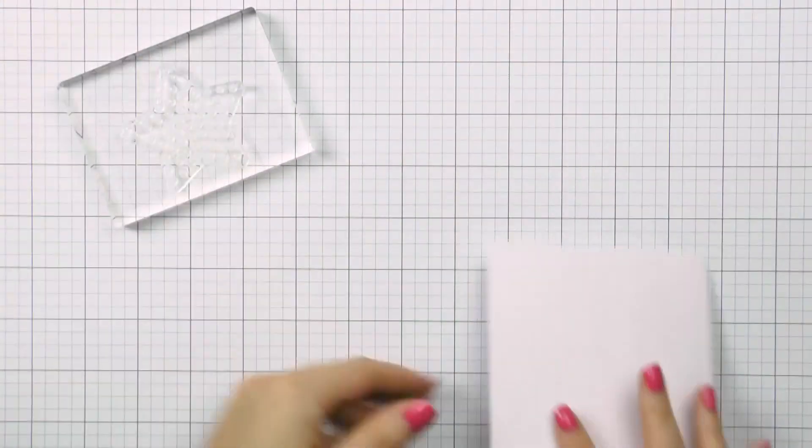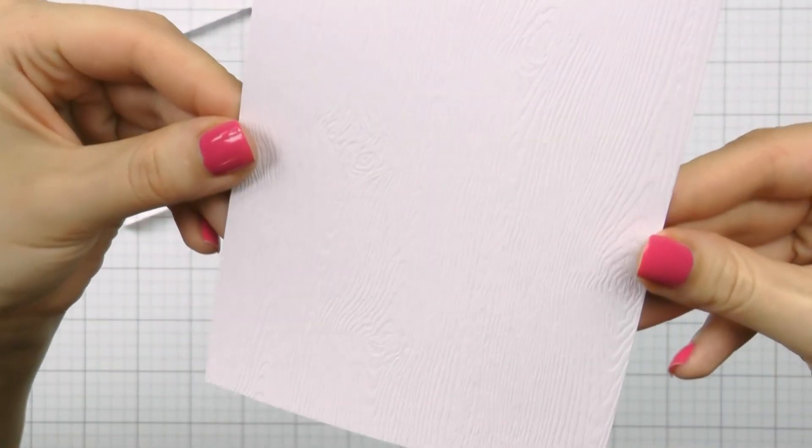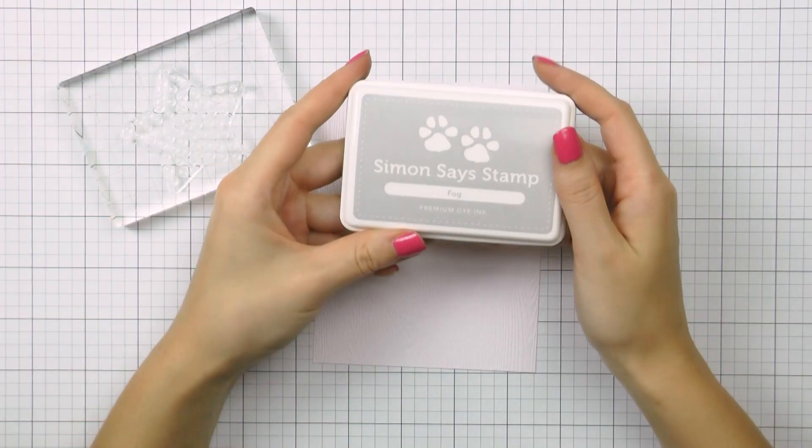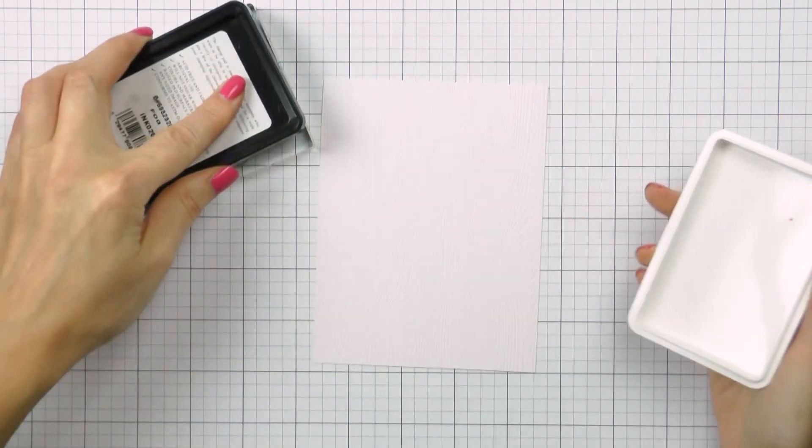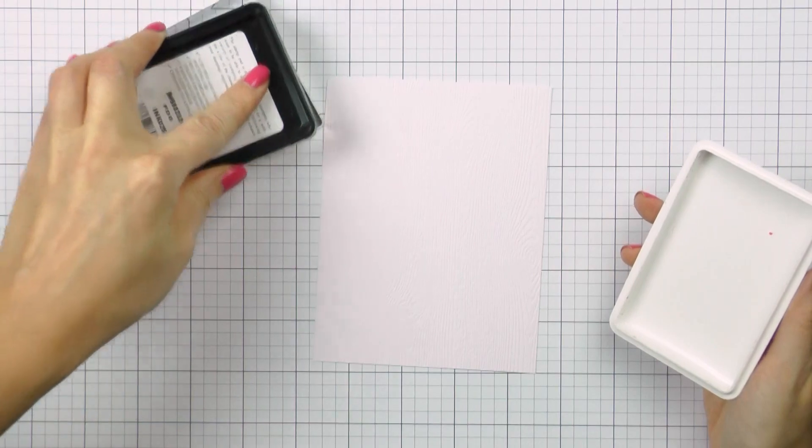So you are probably wondering how does this stamp set work, well let me show you. Here I have a panel of white woodgrain cardstock, I personally love to use this paper for clean and simple projects that feature a lot of white space. Normally I never stamp on this paper because of that texture as you'll never be able to get a good enough impression.